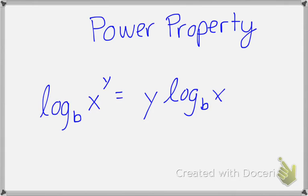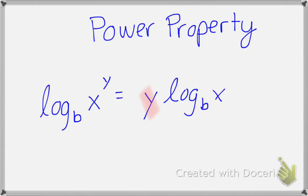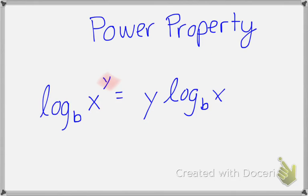The last property we're going to talk about is the power property. Whenever your logarithm is being raised to a power, you can take that exponent and move it to the coefficient, which you see right here — that process is expanding your logarithm. Or you could go backwards: take a coefficient, move it to the exponent, and in that process you are condensing it.